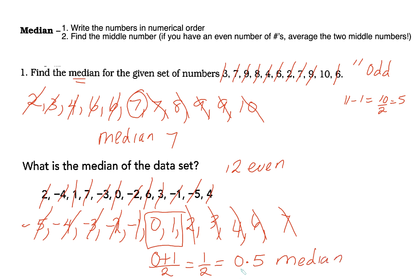Another way to find this: because there are 12 numbers, divide 12 by 2 to get 6. So the 6th and 7th numbers are in the middle. Counting to position 6 confirms these are 0 and 1. This trick is especially useful when you have a large data set.